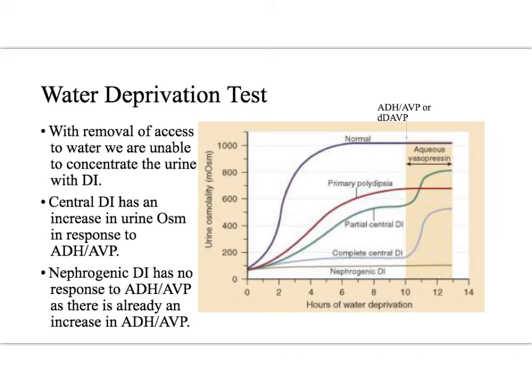On the water deprivation test, when we look at the urine osms, patients with primary polydipsia perform similarly in that they are able to concentrate their urine. The only issue is these patients tend to have hyponatremia when you look at their serum sodium.